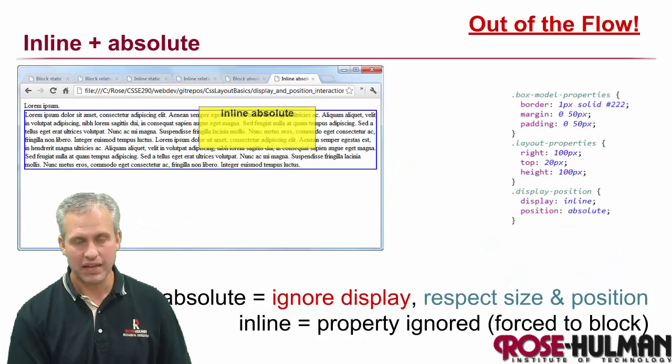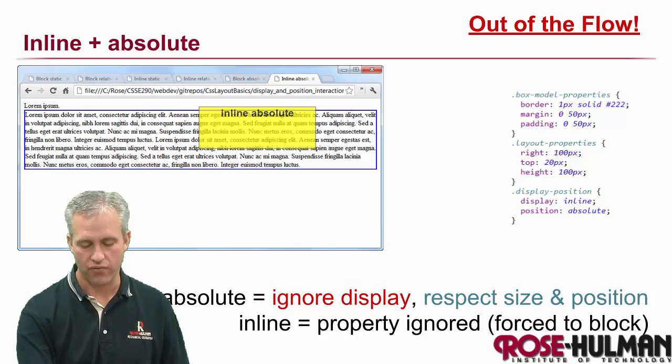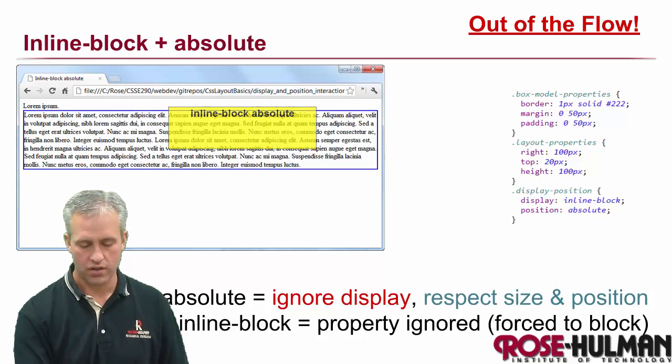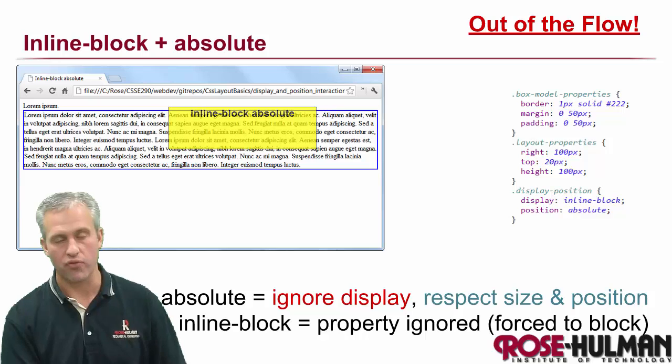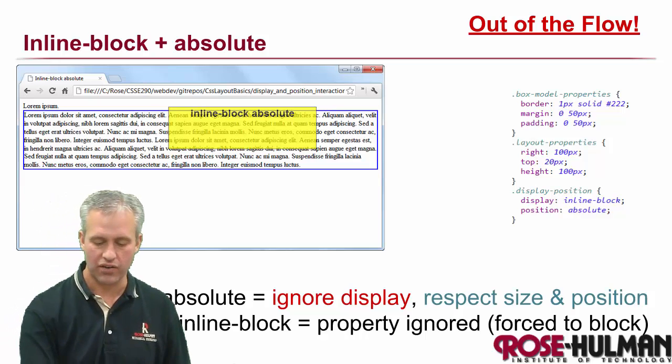We simply know that the others are going to behave the same. So no matter what is set for the display, it pushes it over to block and it actually does respect the size and the position. So I wrote down, it doesn't ignore any of those things. It just ignores display, which is kind of funny. If you didn't believe me, here are the examples for inline and absolute. And then here's the example for inline block and absolute. There you go. Now you believe me.